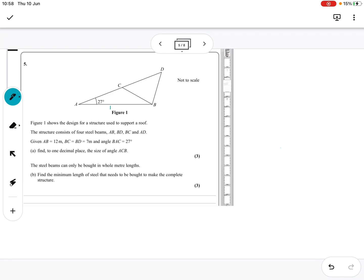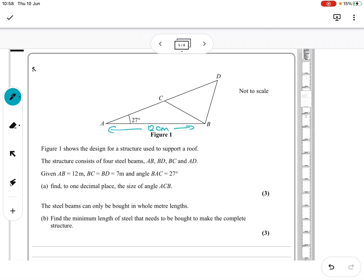So AB is 12. I could actually make it a bit bigger for me. So BC, BC and BD are the same at 7. It's metres, isn't it, not centimetres. And angle BAC, BAC is 27, which it's got. Find to one decimal place. And this is angle ACB, ACB. So we want this one. Okay.